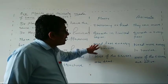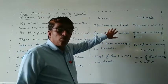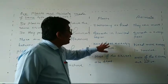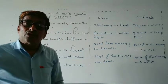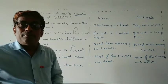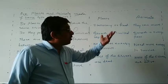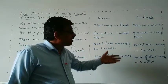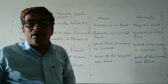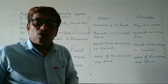Third point: plants are not moving — plants are fixed. Due to this, plants need less energy to survive — very very less energy. But animals are moving, so due to this reason animals need more energy to survive.